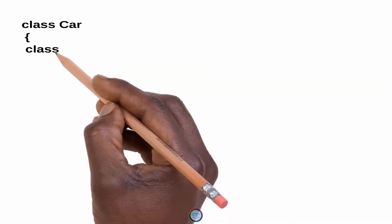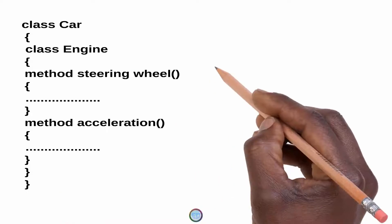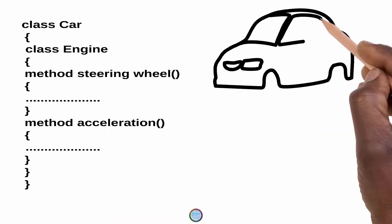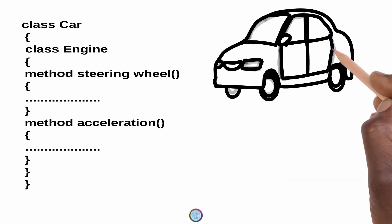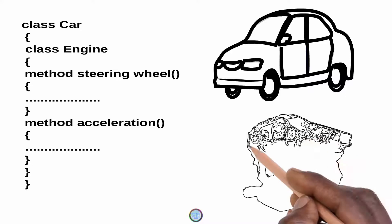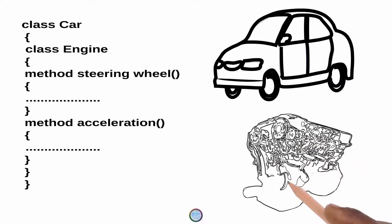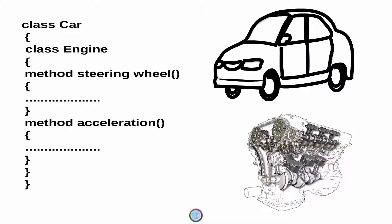As you can see in the video, if I now place the Engine class inside the Car class, then the Car class will basically be able to inherit the functions and methods that are inside the Engine class.